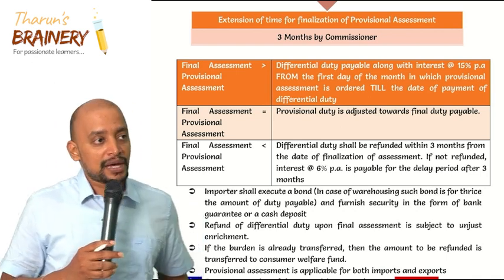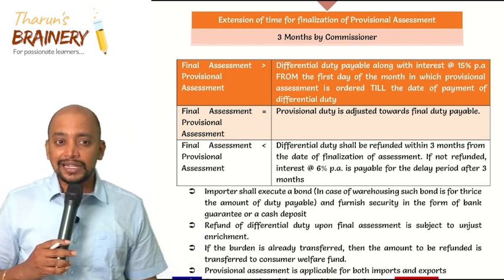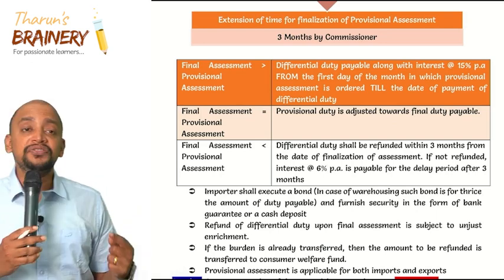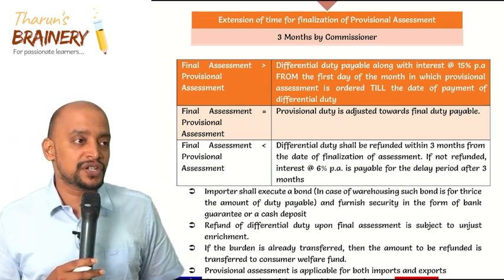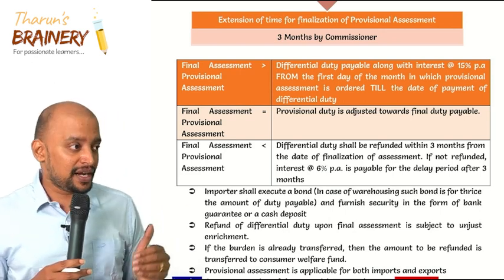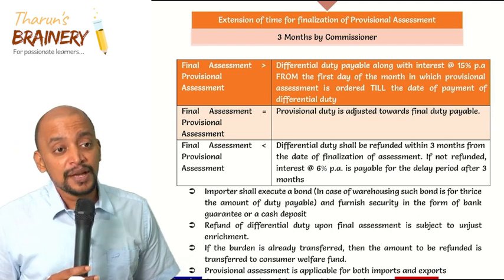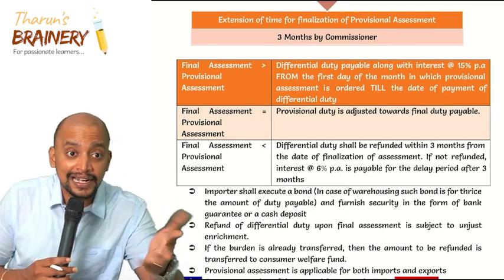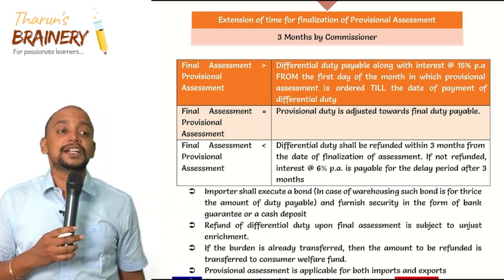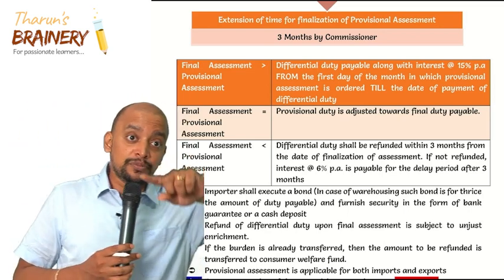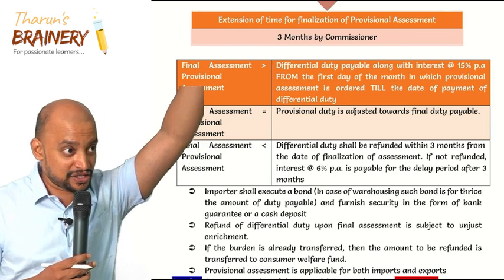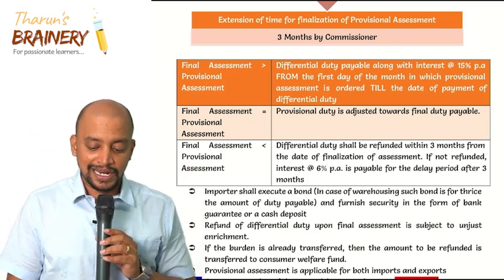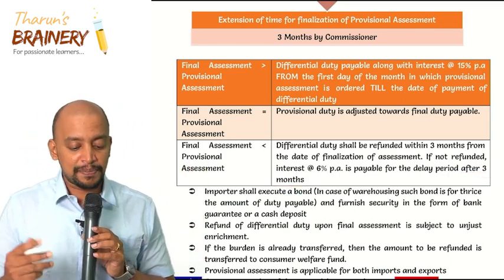If the final assessment amount equals the provisional assessment amount, no differential duty is required, so interest also will not arise. However, if the final assessment amount is less than the provisional assessment amount, we need to get a refund. Interest is payable on the refund — but only after three months from the date of final assessment. If refund is not granted within three months, interest at 6% per annum will be paid, computed for the delay period after three months.